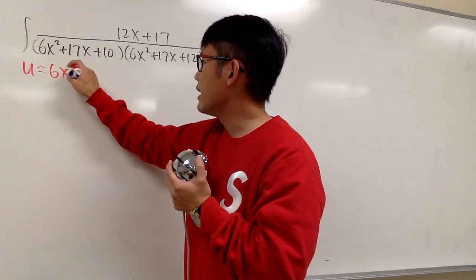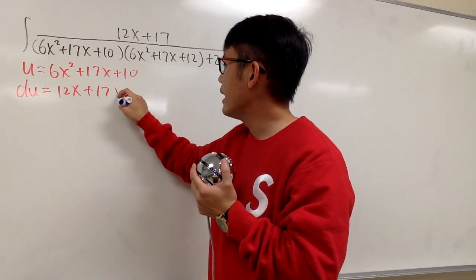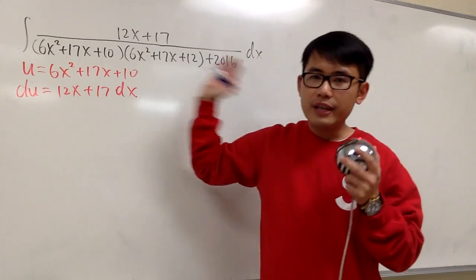Then u equals this. u is equal to 6x squared plus 17x, and don't forget the plus 10. And then once again, we can measure this real quick. We get du equals 12x plus 17 dx, right? And this matches exactly the top. And if you want to take this into u world, go ahead and do so.